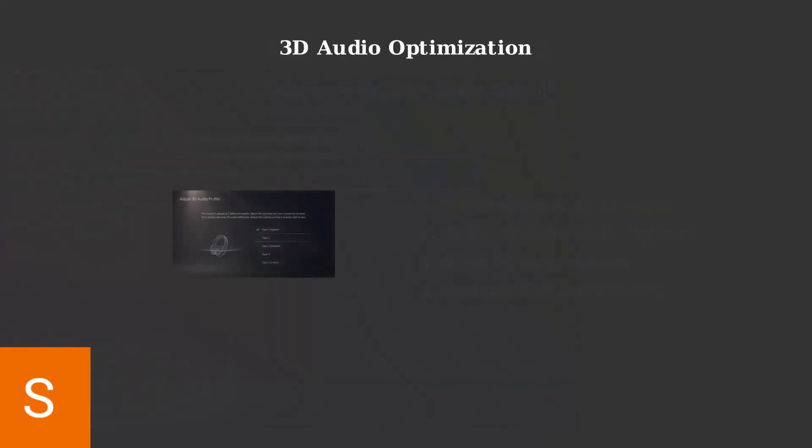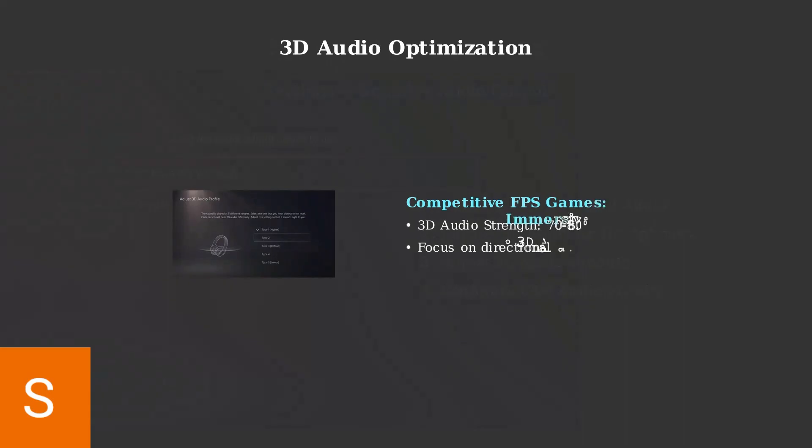The 3D audio strength setting should be adjusted based on your gaming preferences. For competitive FPS games like Call of Duty or Apex Legends, set the strength to 70% to 80% for precise directional audio. For immersive single-player experiences, use 90% to 100% for maximum spatial depth.